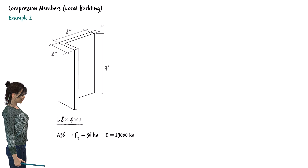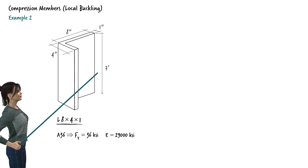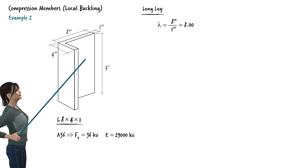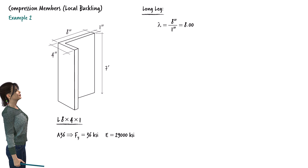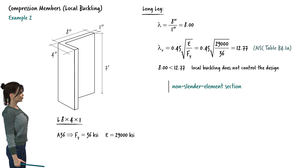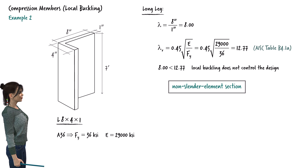Consider a column with a standard L8×4×1 section, 7 feet long, with A36 steel. Although the section has two unequal legs, we only need to consider the longer leg since it has a larger width-to-thickness ratio. The controlling lambda equals 8 inches over 1 inch, or 8. Since lambda does not exceed lambda_r for legs of angles, L8×4×1 is a non-slender element section, meaning local buckling does not control the design.